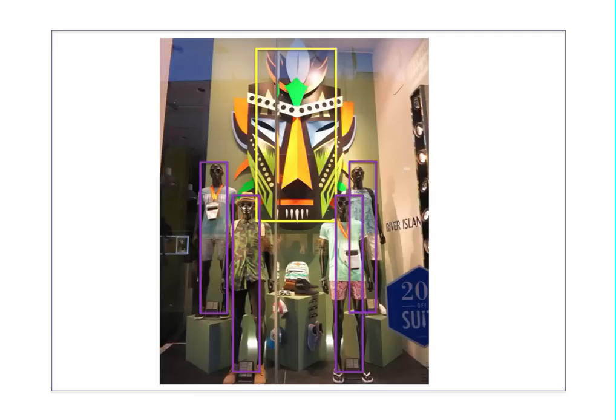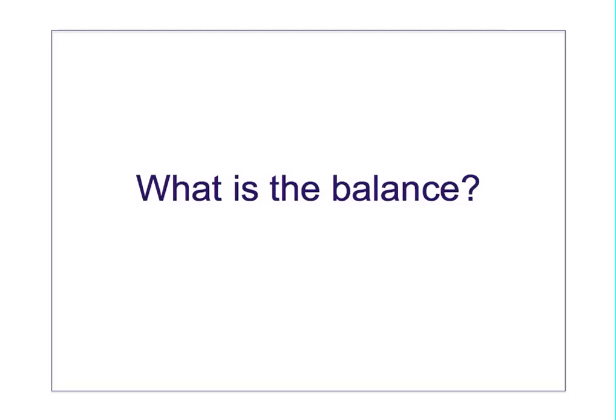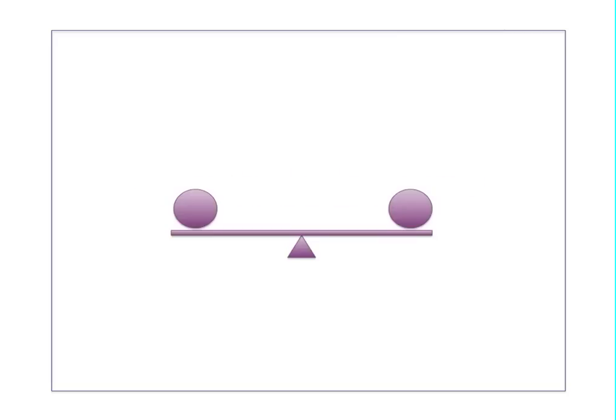So what is meant by balance now? Balance provides a feeling of stability to the shop window. We are used to this type of balance: two identical shapes, two identical things with the same weight on the two sides of the scale.